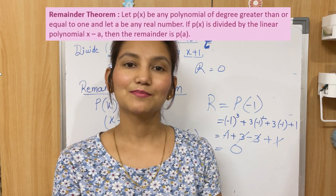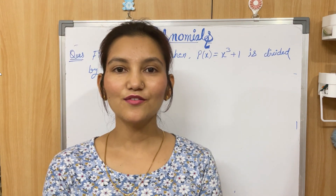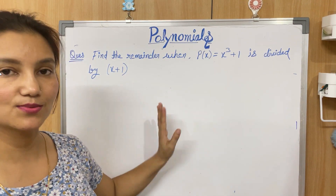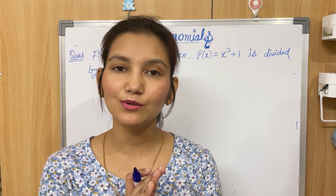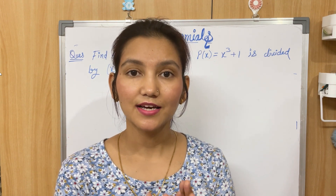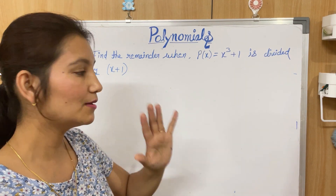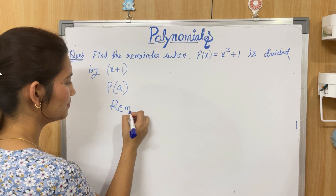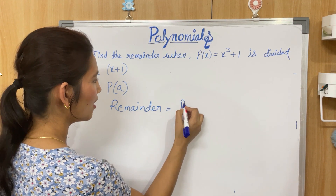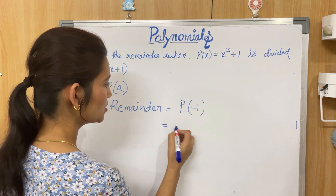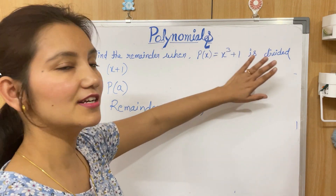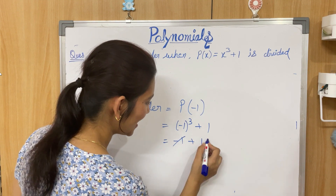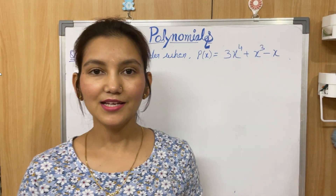Let's solve another question: find the remainder when p(x) = x³ + 1 is divided by x + 1. By the remainder theorem, dividing by x + 1 means a = −1, so remainder = p(−1). Substituting: (−1)³ + 1 = −1 + 1 = 0. So the remainder is 0.